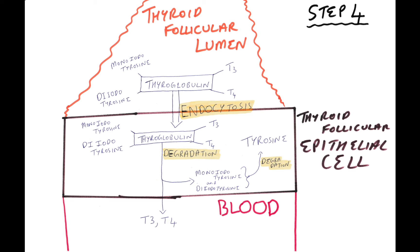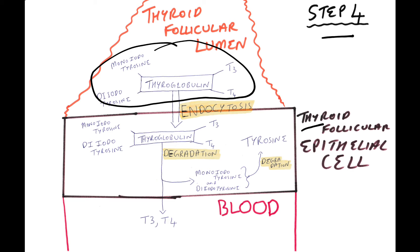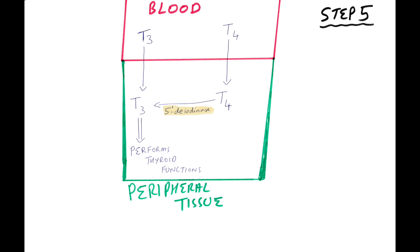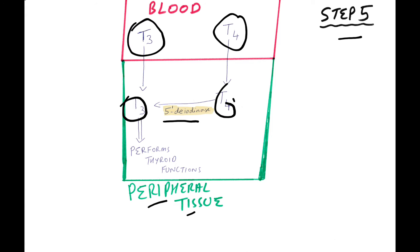Step 4: This compound is taken up by the thyroid follicular epithelial cell by endocytosis and undergoes degradation to form T3 and T4, which go into the blood. Monoiodotyrosine and diiodotyrosine also undergo degradation to regenerate tyrosine.